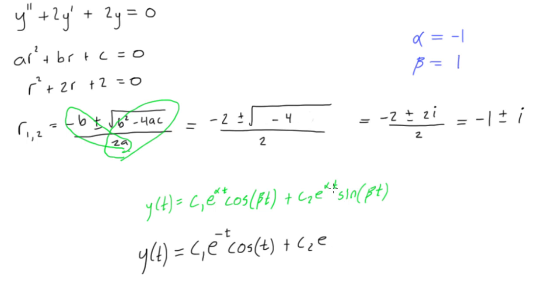Plus c2e to the alpha t, again, alpha is negative 1, so negative t. Now we have a sine of beta t, and beta is 1 times t, so we just get t. And there we go, this is the general solution for our differential equation that we looked at in this problem. And this has the form for two unique complex roots.